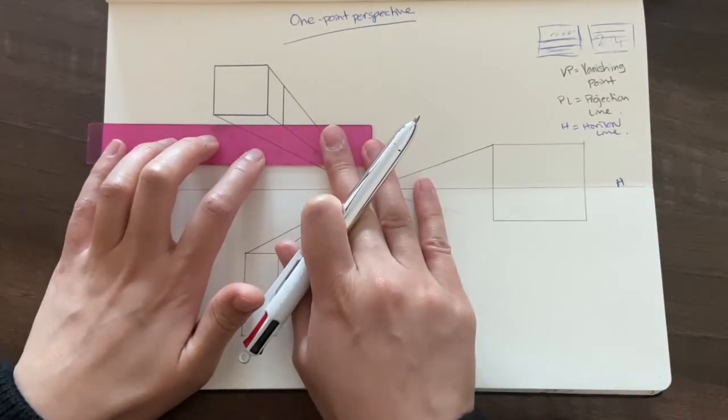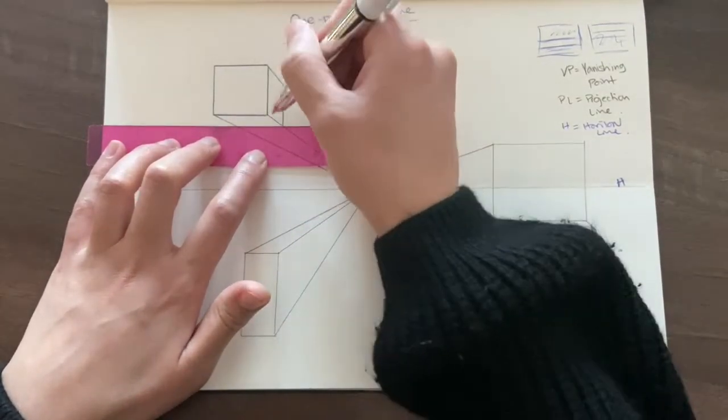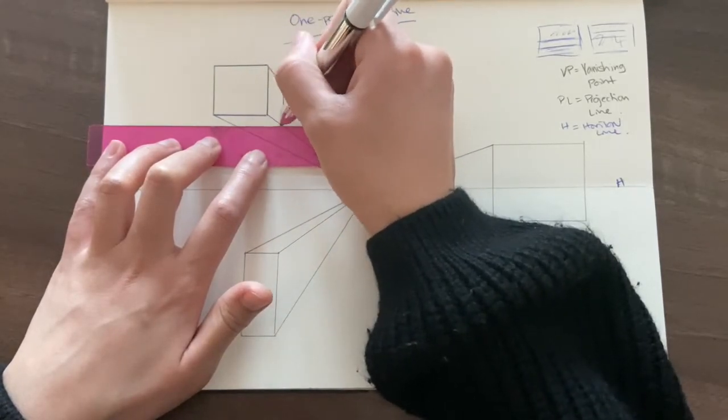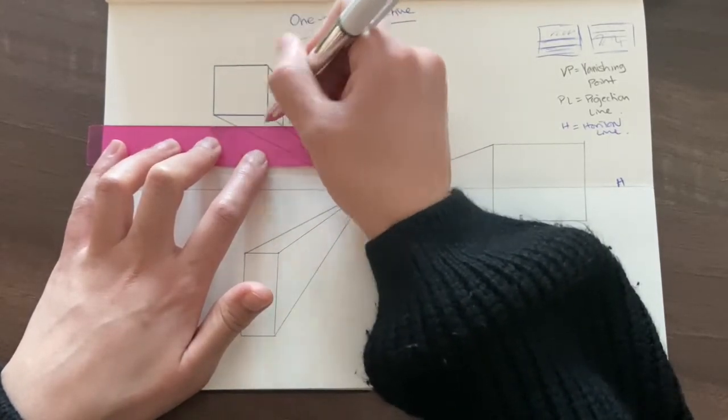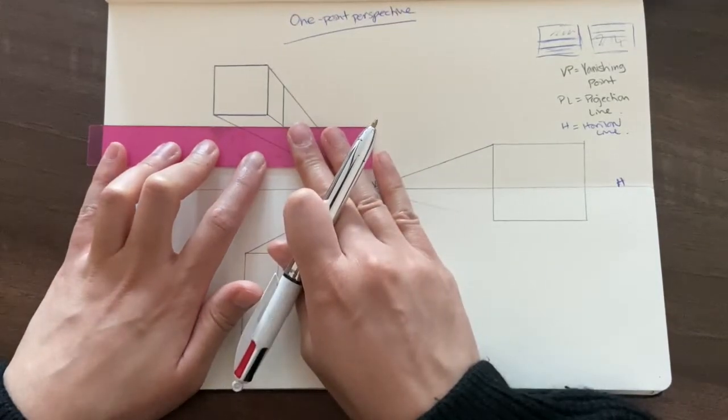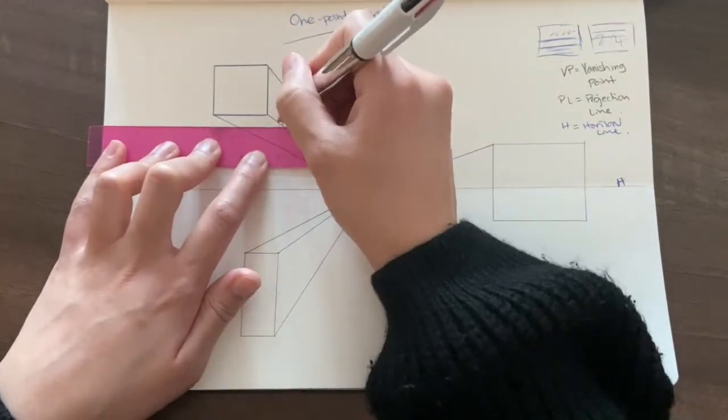So just move down at the same pace, and then once you move down to this point here, this is the part where you need to join up all of those lines, so that way it completes the shape.